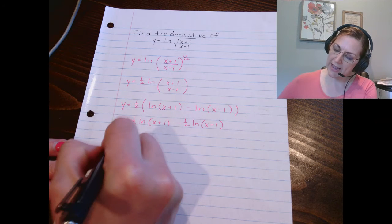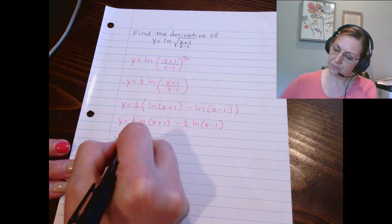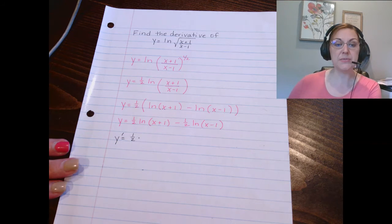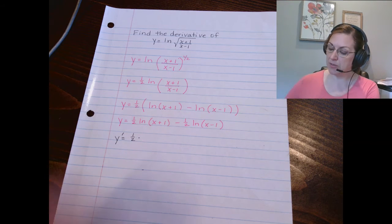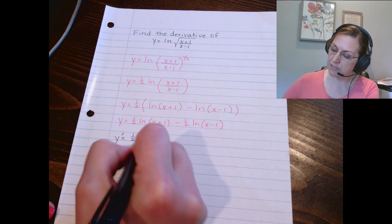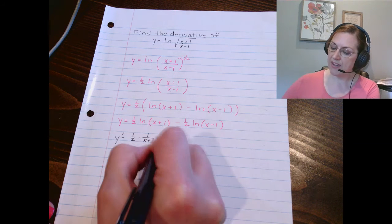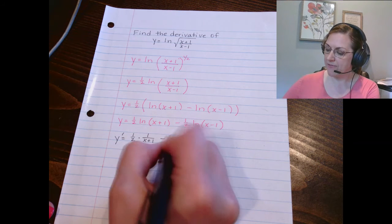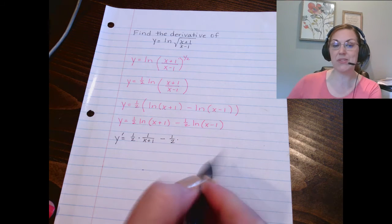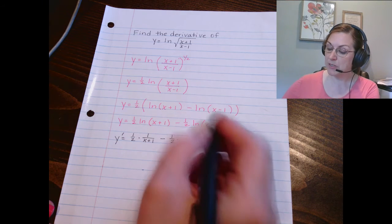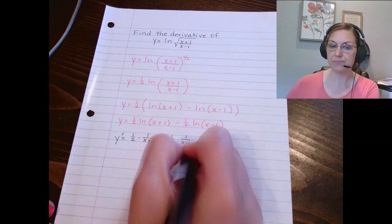Let's do that. So I've got a one half times, and then the derivative of ln of x plus 1 would be 1 over x plus 1. Then I've got minus one half times the derivative of the ln of x minus 1, which is 1 over x minus 1.